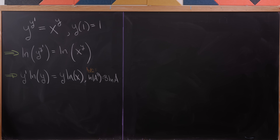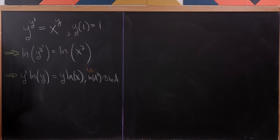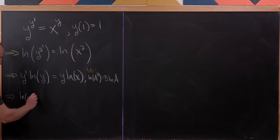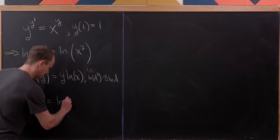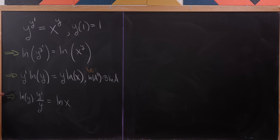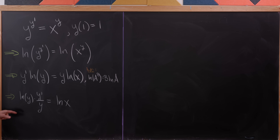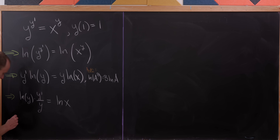Now, where do we go from here? We'd like to do something like separation of variables — get all the dependent variable terms on one side and the independent variable terms on the other. Dividing both sides by y gives us ln(y) · (y'/y) = ln(x). Notice that the derivative of ln(y) is y'/y, so it looks like the chain rule has been applied on the left, which motivates a substitution.